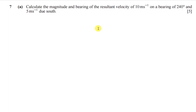So let's have a look at this question: calculate the magnitude and the bearing of the resultant velocity of 10 meters per second at bearing 240, and 5 meters per second due north. We have two different velocities - the first is 10 m/s at bearing 240, and the second is 5 m/s due north. What we want to find is the magnitude and bearing of the resultant velocity.